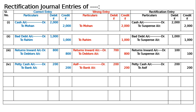Fifth entry: a check of 150 received from Sarad has been dishonoured and debited to the Discount account. It should have been: Bank account debited to Sarad. The dishonoured receipt from Sarad — which was Bank to Sarad — became Sarad to Bank. It became Discount account debited to Bank account, 150. So the wrong entry recorded was Discount account debited to Bank, 150.